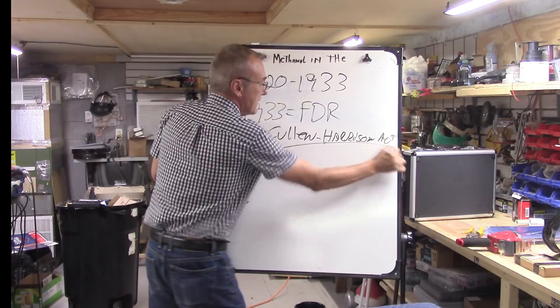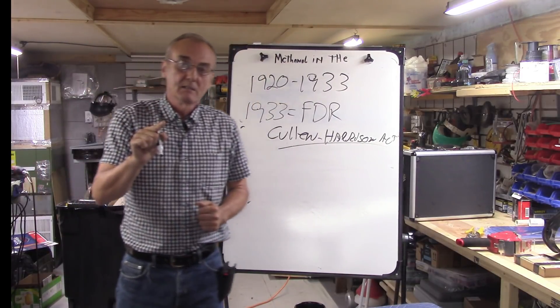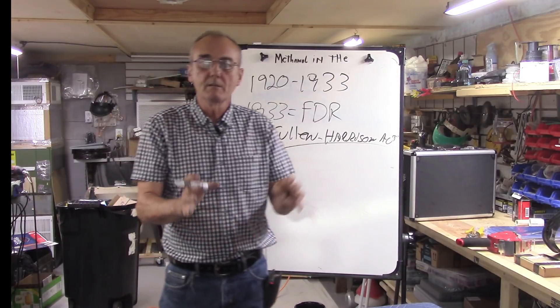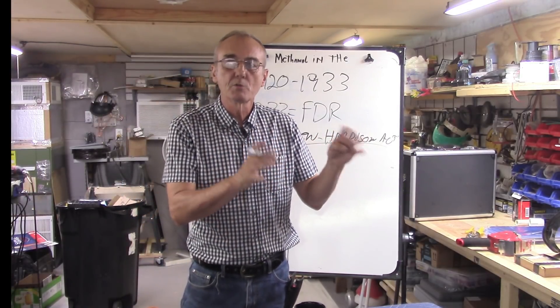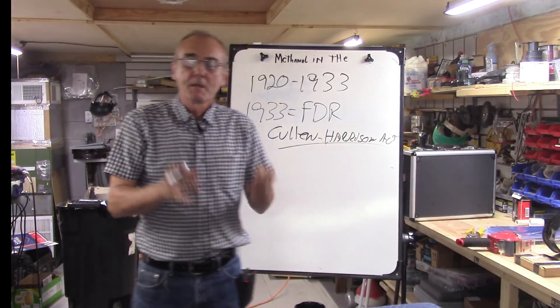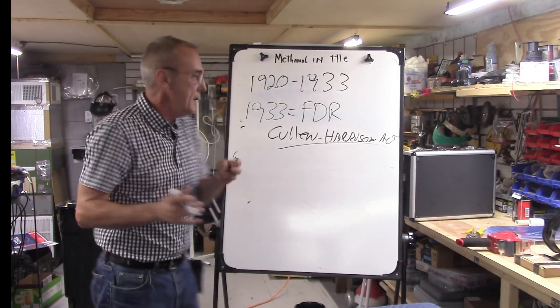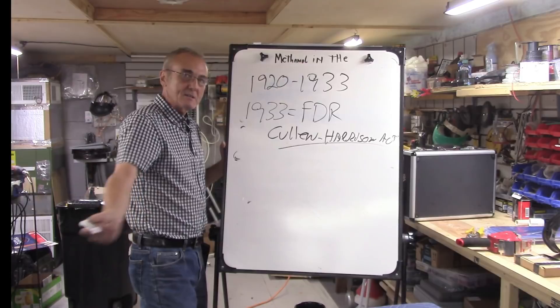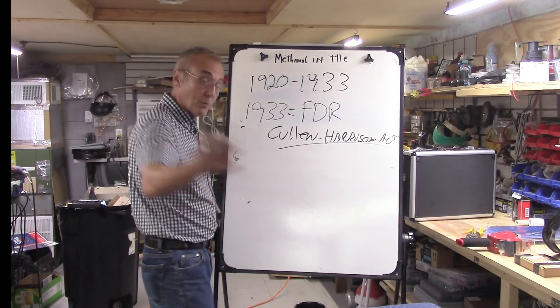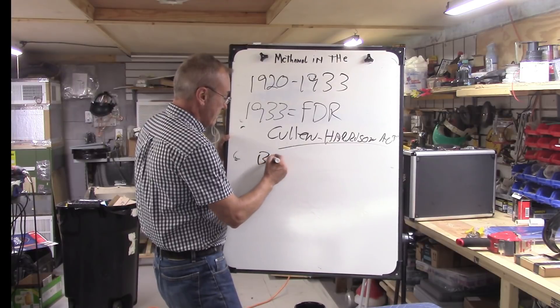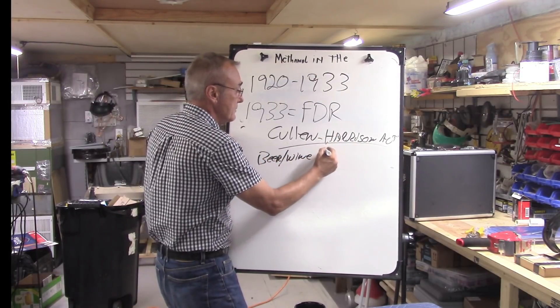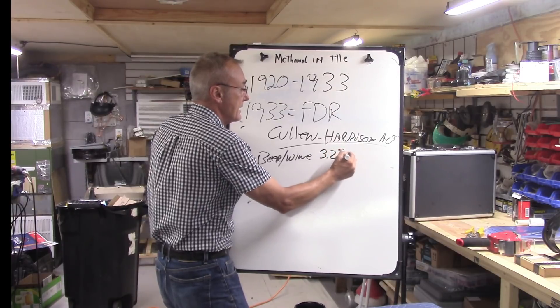The Cullen-Harrison Act actually amended the 18th Amendment, which prohibited the sale and use of alcohol. The amendment was that he was permitting the U.S. to produce - and even home distillers or home brewers - to make beer and wine provided it was 3.2% ABV or lower.